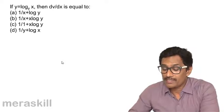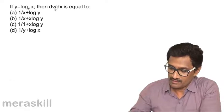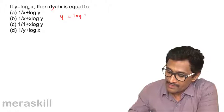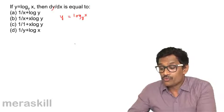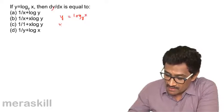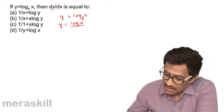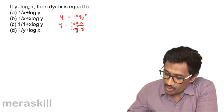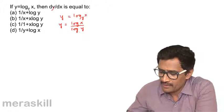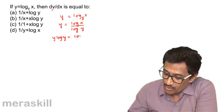Here we have y = log x to the base y, and we need to find dy/dx. We change this to regular log base e. Using the change of base formula, y = log x / log y (both base e). Cross-multiplying gives y·log y = log x.